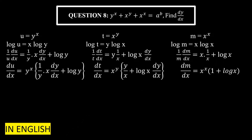Notice that x cancels with x in the first term, leaving 1. So (1/m)·(dm/dx) = 1 + log(x). Taking m to the right-hand side and substituting m = x^x, we get: dm/dx = x^x · (1 + log(x)).